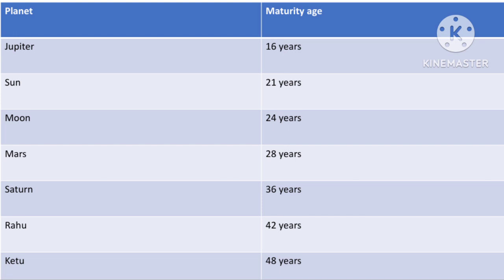Jupiter is also a divine guru who signifies god and auspiciousness, so around 16 years is the right age to start thinking about higher learning, higher knowledge, and spirituality. Jupiter's effects are more pronounced at 16 because that is when you need to take a very wise decision. It is not that Jupiter does not give effects of its mahadasha or antardasha before age 16 — it does — but at 16 you are mature enough to understand what needs to be done with Jupiter's energy.